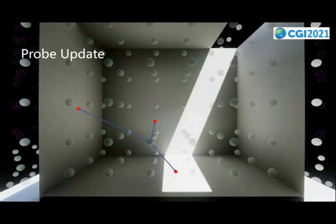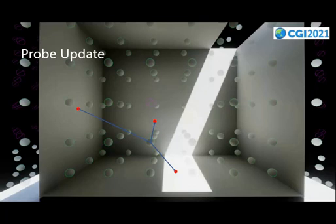After probe positioning is done, we update probes using sphere tracing to get the ray intersection of the signed distance field. The red points in the picture are the hit points of rays starting from a given probe. We then query the reflective shadow map at those points to get the irradiance of direct light. To achieve multi-bounce GI, we sample the surrounding probes of the hit point. By reusing the probe GI from the last frame, we make light bounce through the scene deeper and deeper.